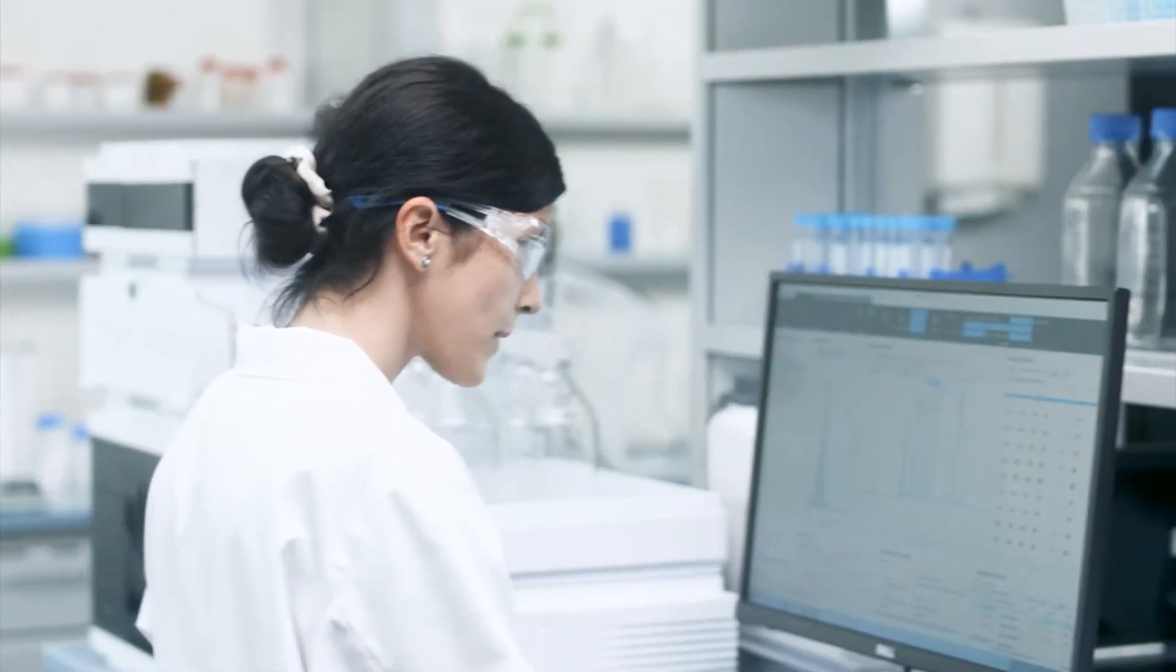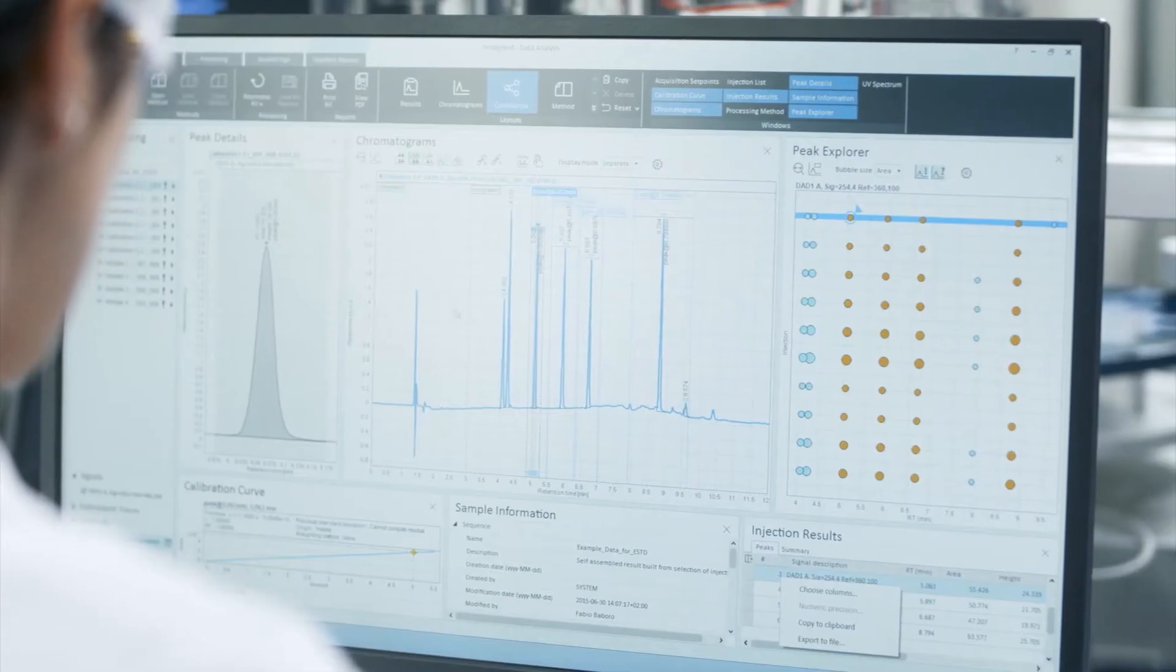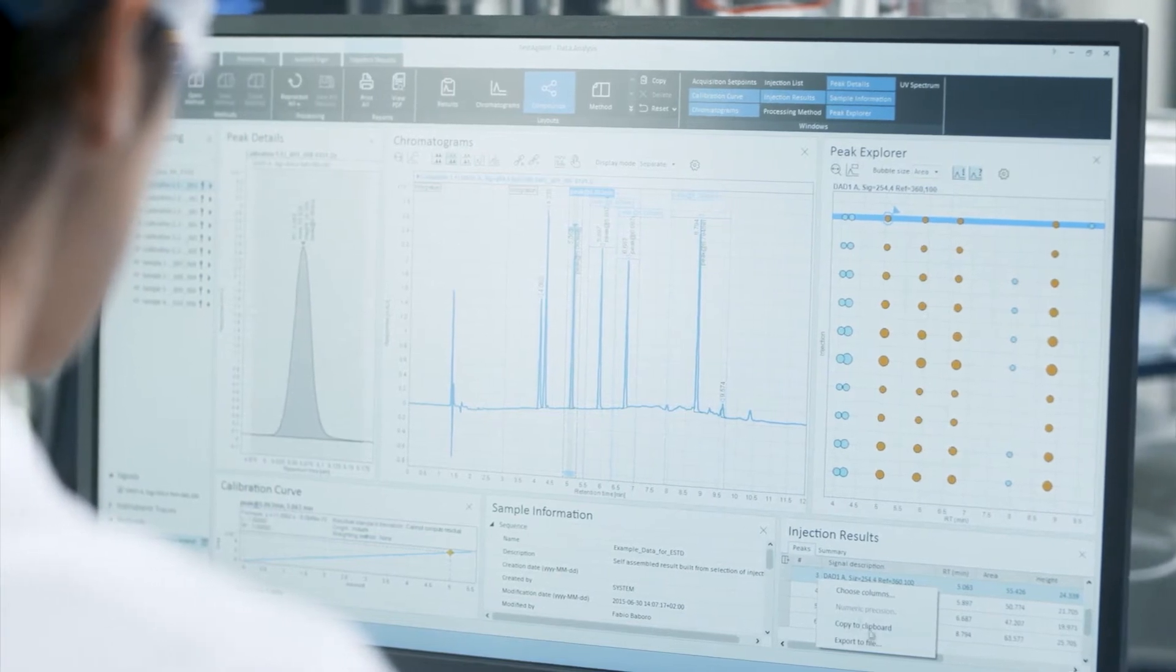The result of the chromatographic analysis is presented as a graph with a series of peaks that correspond to the various components in the sample. The area under each peak indicates the quantity. The type of each component is verified against graphs of the reference substances.